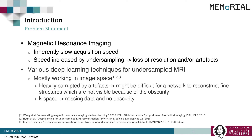Various deep learning based techniques have been proposed in recent times to deal with undersampled MRI. However, they mostly work in the image space. If the image is heavily corrupted by artifacts, it might be difficult for such networks to reconstruct fine structures which are not visible due to the obscurity caused by those artifacts. Working directly in the k-space might be a possible solution to this problem, as in the k-space there is no obscurity — only missing data.